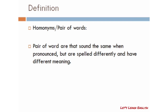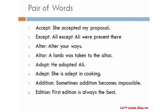That is called pair of words. Let's look at some examples. First: 'accept' means kabul karna — 'She accepted my proposal' (usne mera proposal kabul ker liya). Second: 'except' means 'save' or 'excluding' — 'All except Ali were present' (class mein sab present the Ali ke siway).